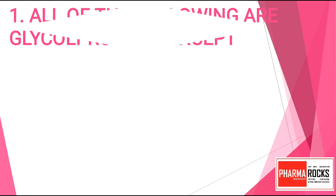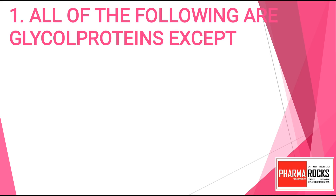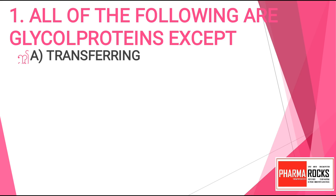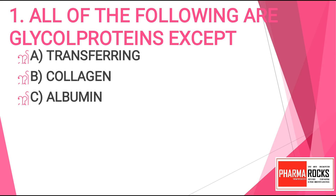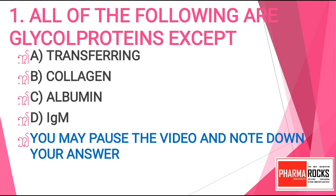Question number 1. All of the following are glycoproteins except: Option A. Transferrin. Option B. Collagen. Option C. Albumin. Or Option D. IgM. You may pause the video and note down your answer. The correct answer for this question is Option C. Albumin.